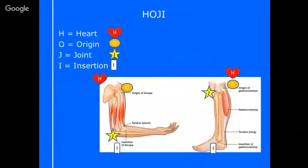The acronym is HOJI — H-O-J-I. The H stands for Heart. First of all, you need to get a really good picture of the muscle itself — like you can see with the bicep on the screen, and also the calf. If you look at the bicep, you know where the heart is in relation to the bicep. That's the first thing to draw on your image: where is my heart relative to this muscle?